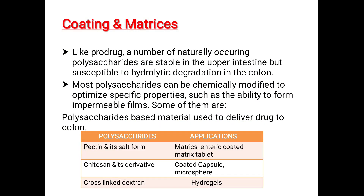Coating and matrices. Like prodrug, a number of naturally occurring polysaccharides are stable in the upper intestine but susceptible to hydrolytic degradation in the colon. Most polysaccharides can be chemically modified to optimize specific properties such as the ability to form impermeable films. Some polysaccharide-based materials used to deliver drug to the colon include pectin and its salt forms, used as coated capsules and microspheres, as well as crosslinked texture hydrogels.